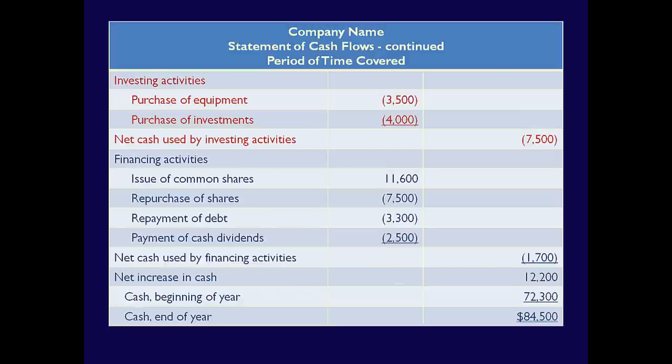Investing activities are next. You'll note there's a net cash outflow of $7,500. This is due to the purchase of both equipment and investments. Finally, let's look at financing activities. Some of the items under financing activities have a connection to the Statement of Changes in Equity. Here we see that the company issued shares as well as repurchased some. They also paid dividends. Let's quickly flip back to the Statement of Changes in Equity so we can see the relationship.